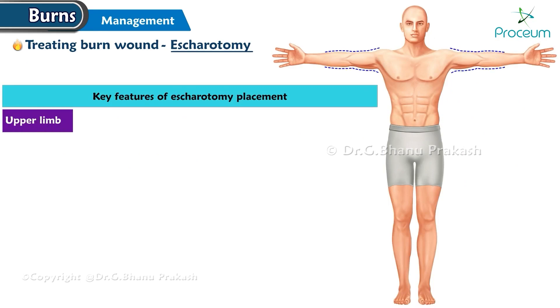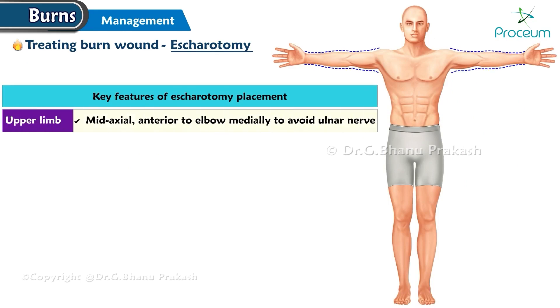Upper limb: mid-axial, anterior to the elbow, medially to avoid the ulnar nerve.